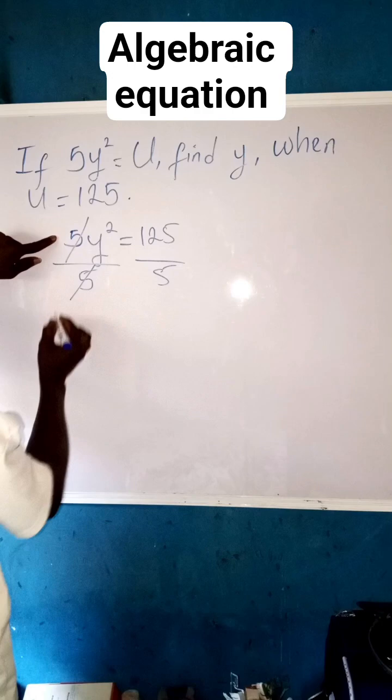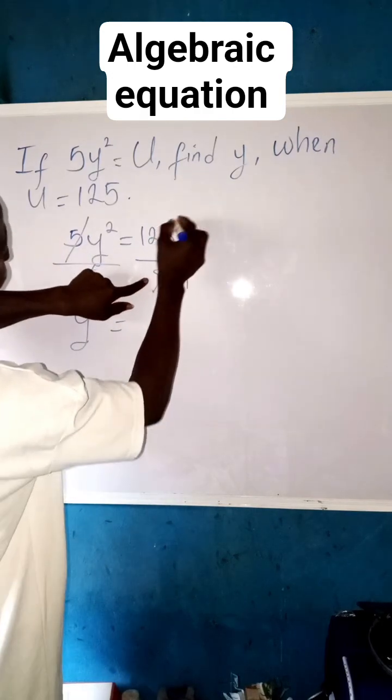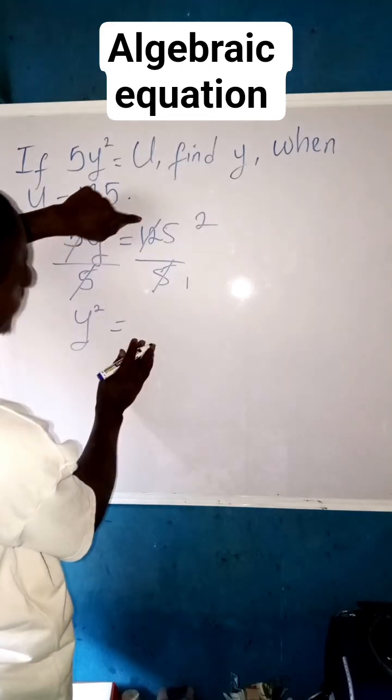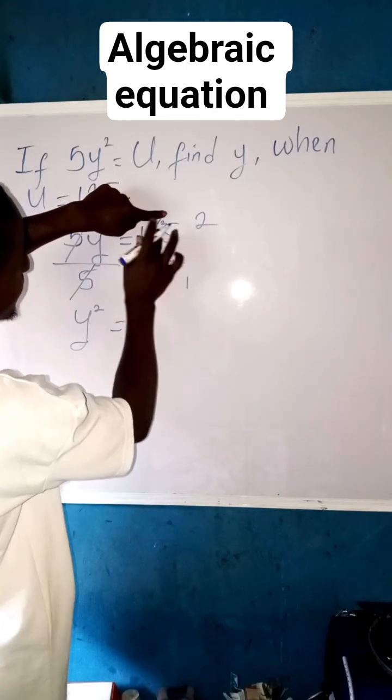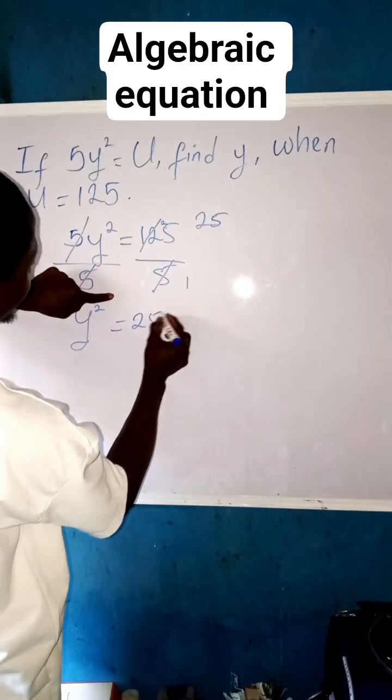So that 5 cancel 5 and our y squared is now equals to, 5 here is 1. 5 in 12 is 2, remember that 2. When you add the 2 here, that's 25. So 5 in 25 is 5. So we are left with y squared equals to 25.